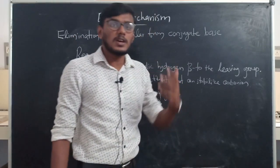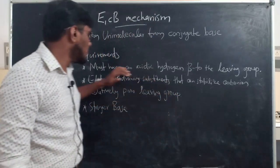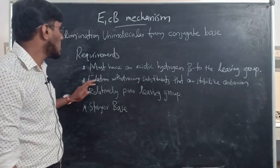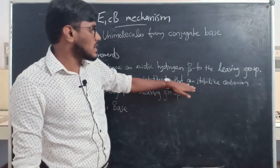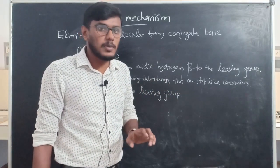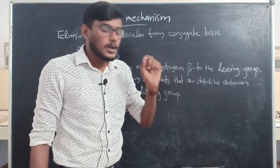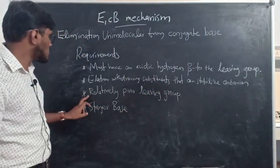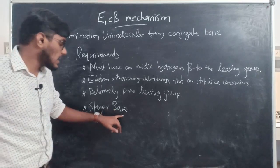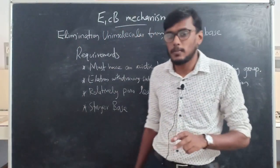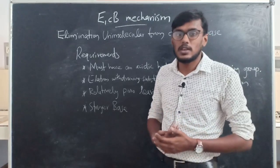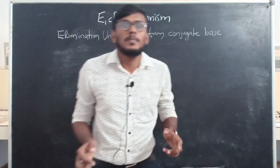What are the requirements for a substrate to undergo E1CB elimination? First, the compound must have an acidic hydrogen beta to the leaving group. Second, an electron-withdrawing group or substituent that stabilizes the carbanion intermediate — substituents that stabilize the carbanion formed in the first step favor E1CB. Third, a relatively poor leaving group also favors E1CB. Fourth, a relatively stronger base also favors E1CB.